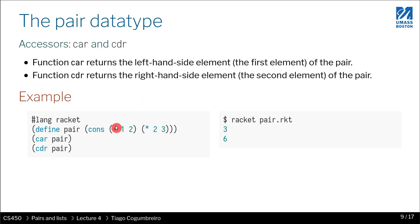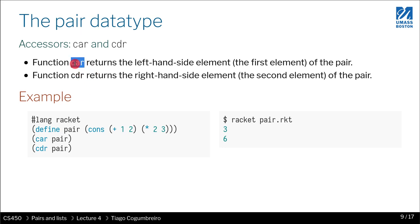Now I want to introduce CAR and CDR. CAR exists because Racket is a descendant of Lisp, one of the first programming languages ever created. At that time, computers didn't have much memory, so they couldn't write long names. Therefore, CAR means the first element and CDR means the second element of a pair.